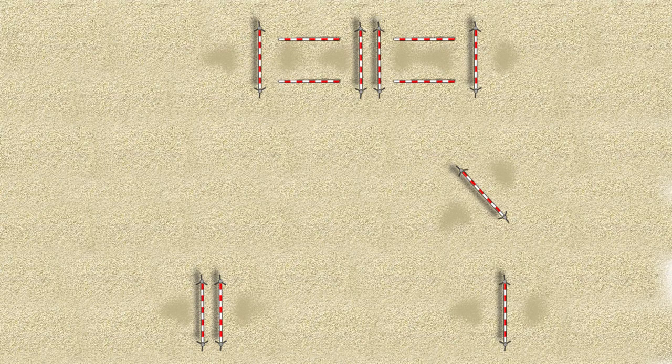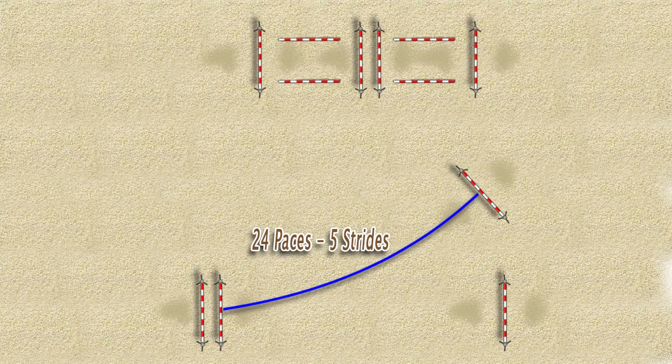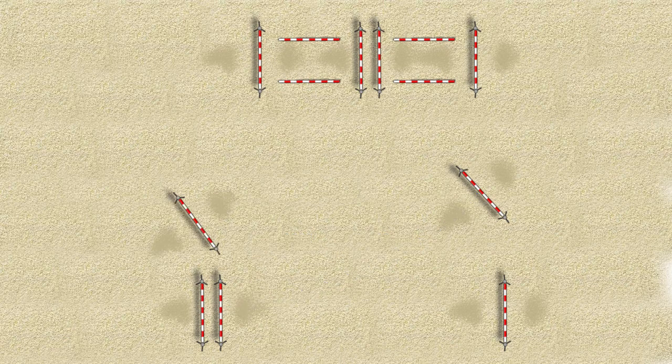You then set up a vertical at an angle like this. It's a related distance to the oxer in the line you just set up and also rides five strides, so it walks 24 paces on a curve to the oxer.